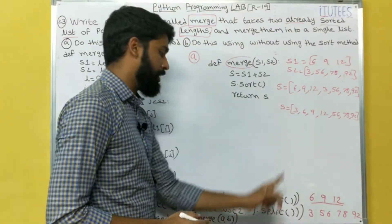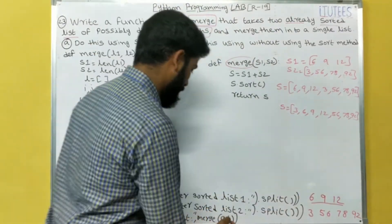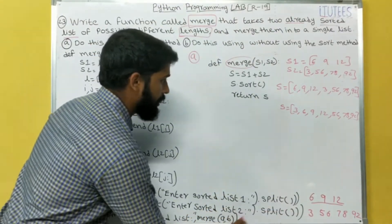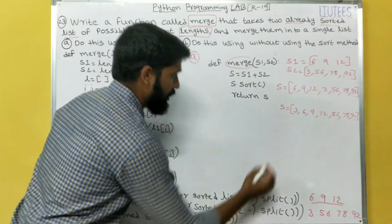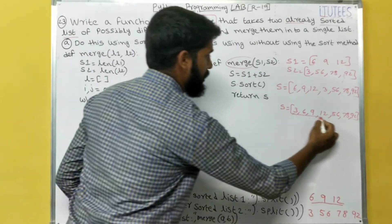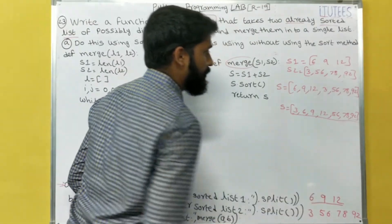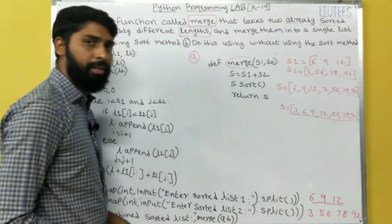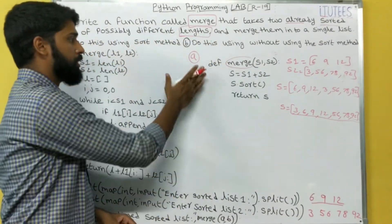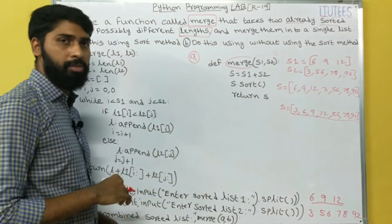This is the sorted list. When we print the output, the result is 3, 6, 9, 12, 56, 78, 92. So this is the first method using the sort function.